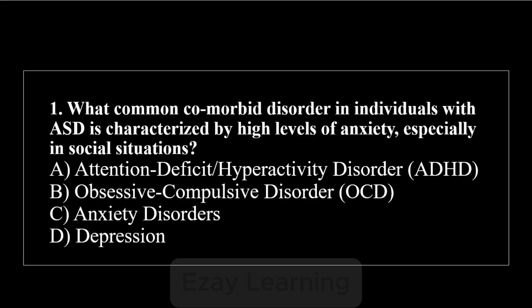Coming towards the MCQs, you can simply read the MCQ, pause the video, answer in your mind, and then resume the video to check if your answer is correct. You can also share your answer in the comments. Which co-morbid disorder in individuals with AST is characterized by a high level of anxiety, especially in social situations? The answer is anxiety disorders.